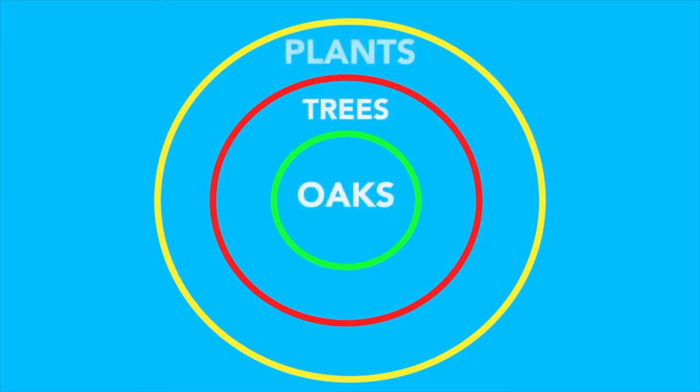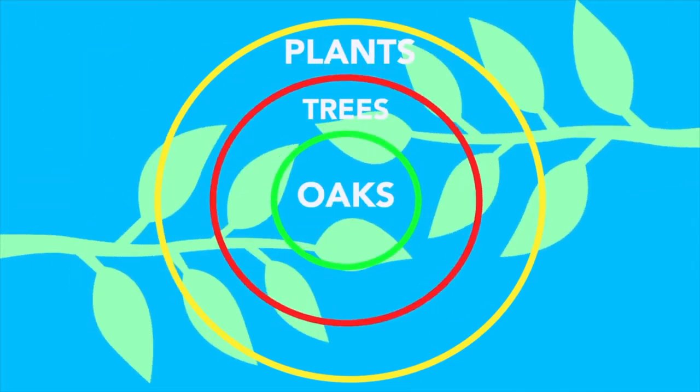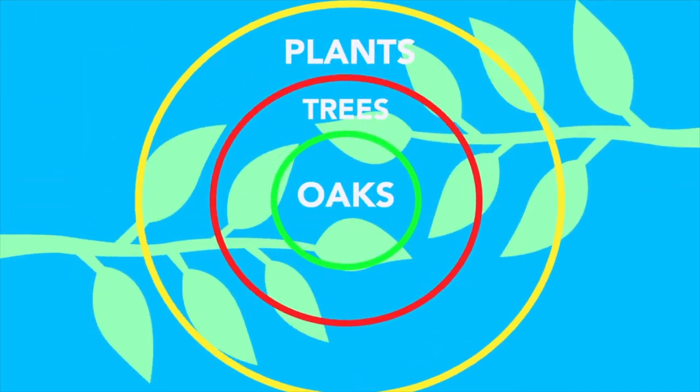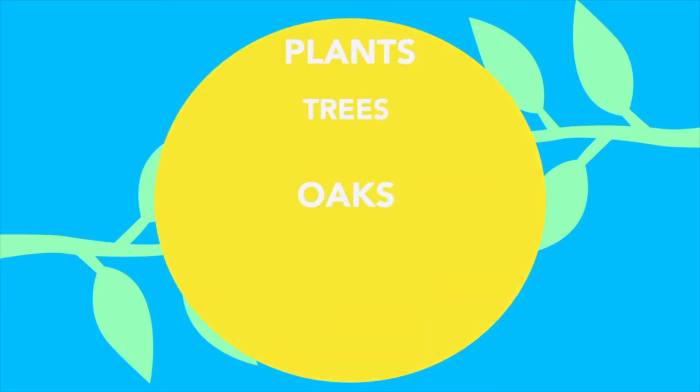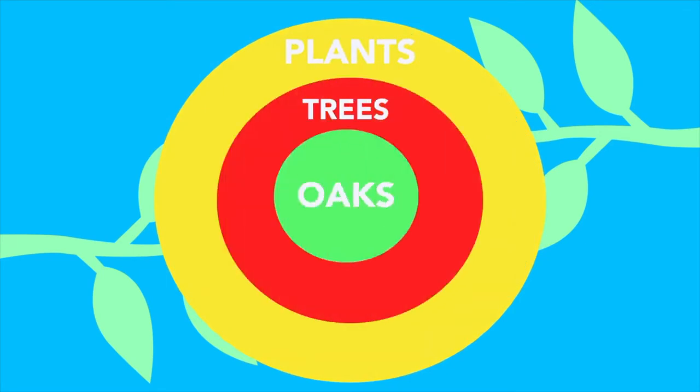This is kind of like the relationship between oaks, trees, and plants. Oak trees are a subset of all trees, and trees are a subset of all plants. Each layer also includes the previous layer. What do each of these three hypotheses suggest about how investors can beat the market? That is, how can investors earn a higher return than the market return under each of these three hypotheses?